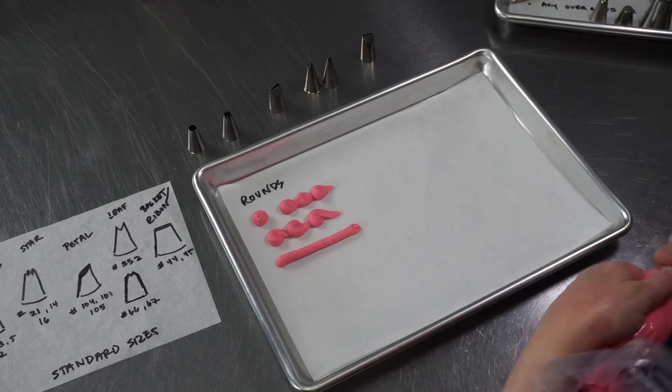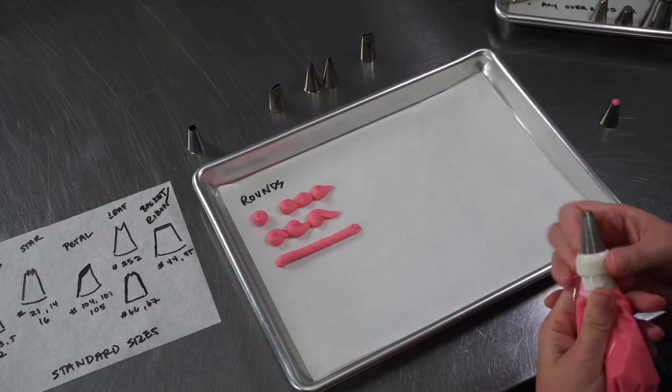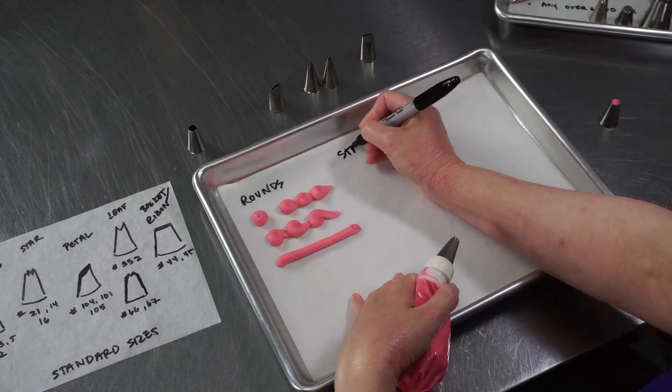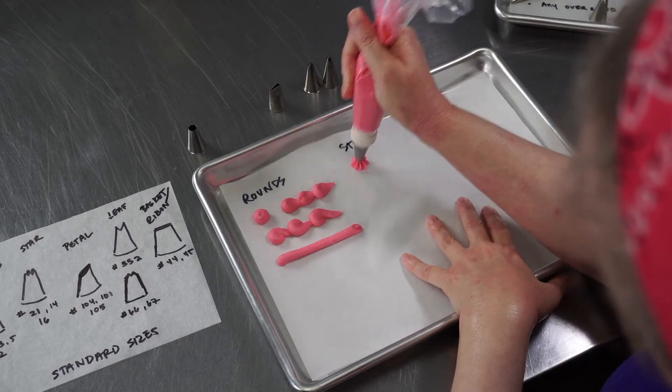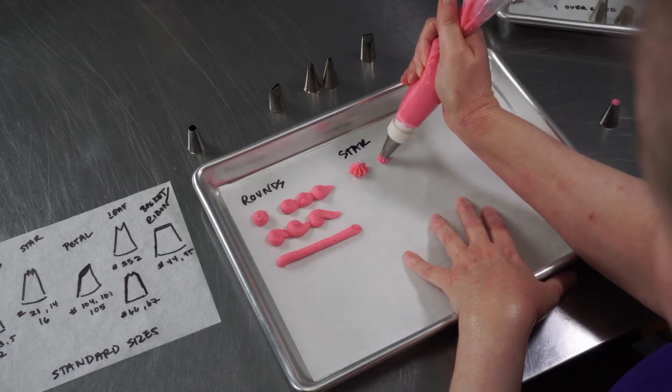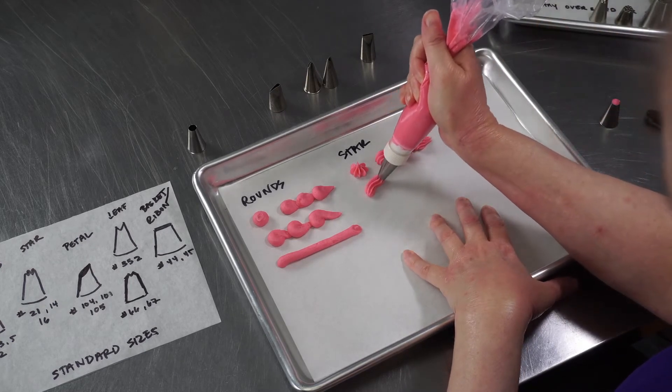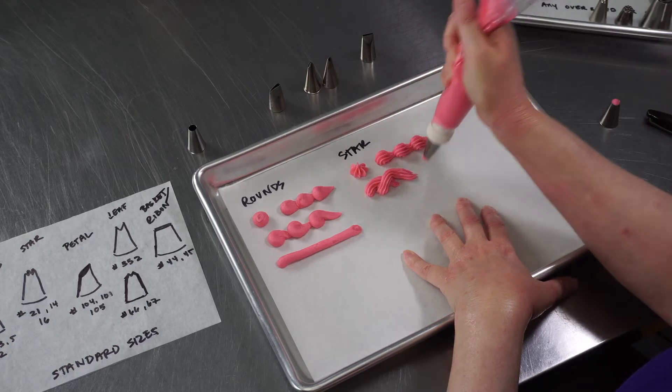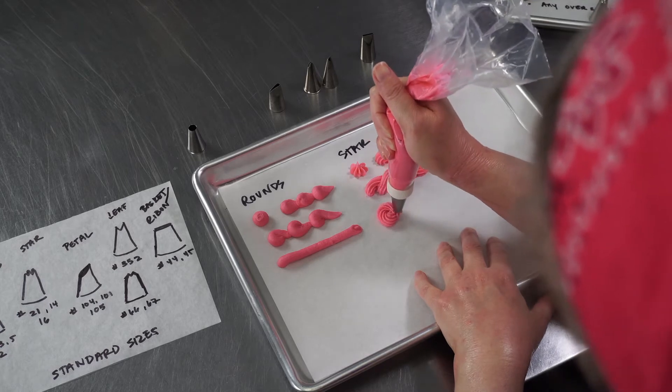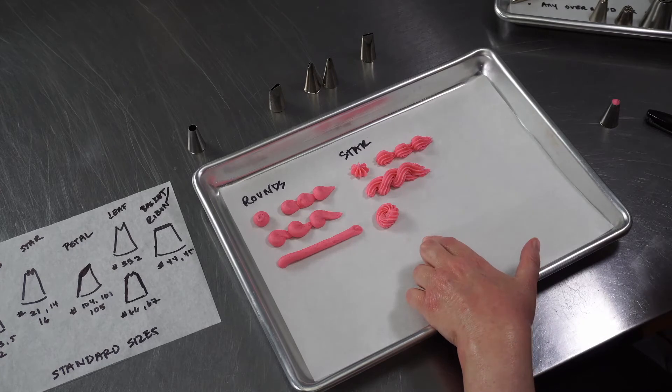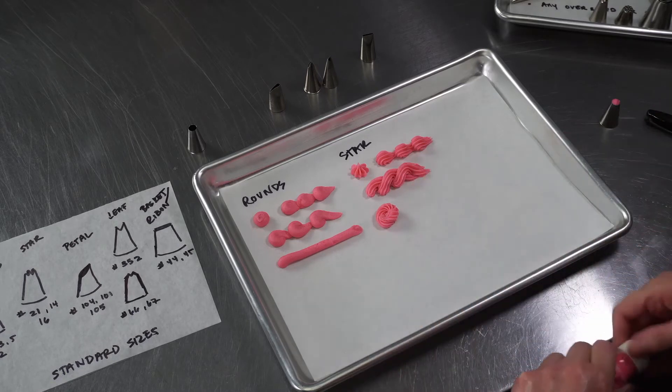The second probably most popular would be your star, and it's also going to be used a lot for borders. But there's also some other fun things that you can do with your star tip. So in addition to just making stars, you can use them to do things like shell borders, ropes. You can also do things like rosettes, and that'll give you a nice finish, not just on top of things like cupcakes and cakes. You can use it to cover the whole side of the cake. So it's a very versatile tip when you're just starting to decorate and learning how to handle things.